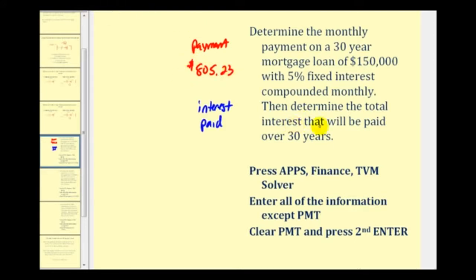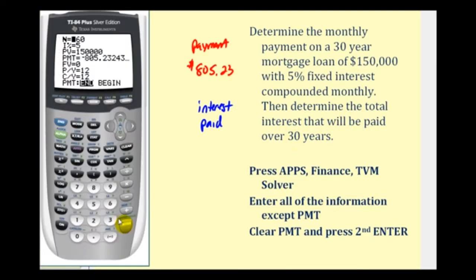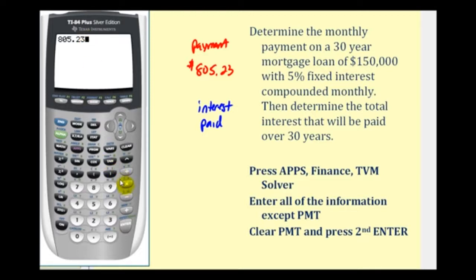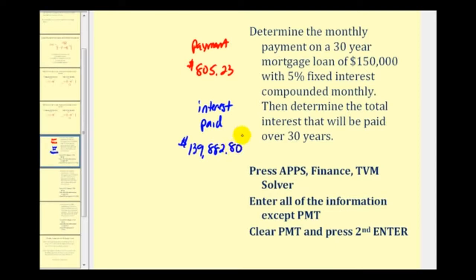Now let's answer the second question: how much interest will be paid over the 30 years? We'll go to the home screen by pressing second mode. Our loan amount of $805.23 will be paid a total of 360 times, or 12 times a year for 30 years. This represents the total amount paid over the 30 years, and if we subtract out the loan amount, that leaves us with $139,882.80 worth of interest paid. So we'll be paying almost as much interest as the loan amount over the 30-year period.